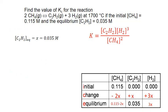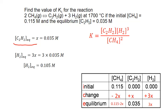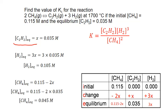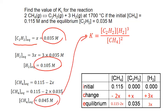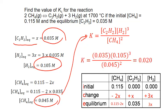We use this relationship to solve for the equilibrium concentrations of methane gas and hydrogen gas by substituting x into those expressions. For hydrogen at equilibrium: 3 times 0.035 equals 0.105 moles per liter. For methane: 0.115 minus 2 times 0.035 gives a final equilibrium concentration of 0.045 moles per liter. Substituting each of these into our equilibrium expression gives a final value for K of 0.020.